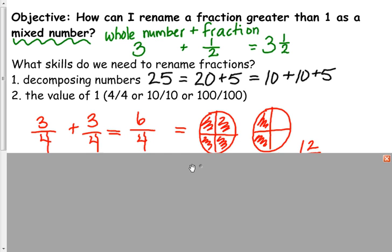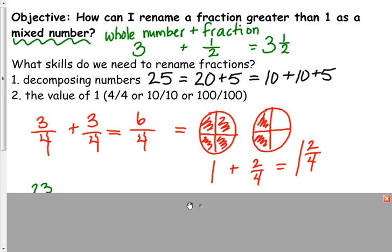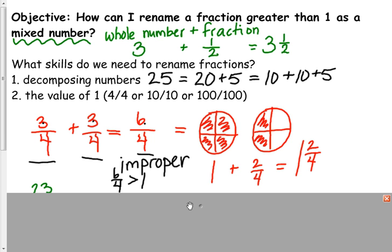I've written a sample already. Let's say you're asked to add 3 fourths plus 3 fourths. I see the denominator is the same, so that stays fourths, and 3 plus 3 equals 6 — so we get 6 fourths. That's an improper fraction, and it's greater than 1 because the numerator is larger than the denominator. So 6 fourths is greater than 1, and we want to turn that into a mixed number, which becomes a proper fraction.